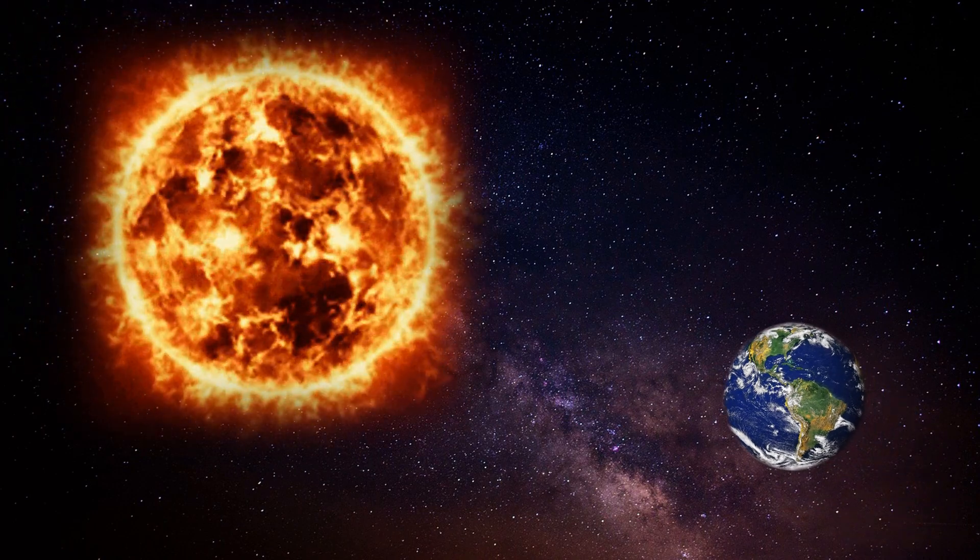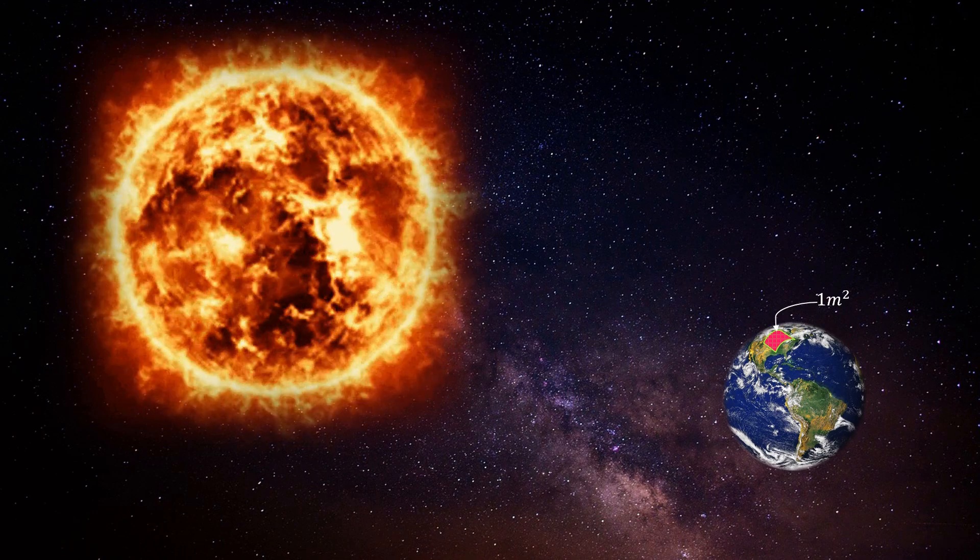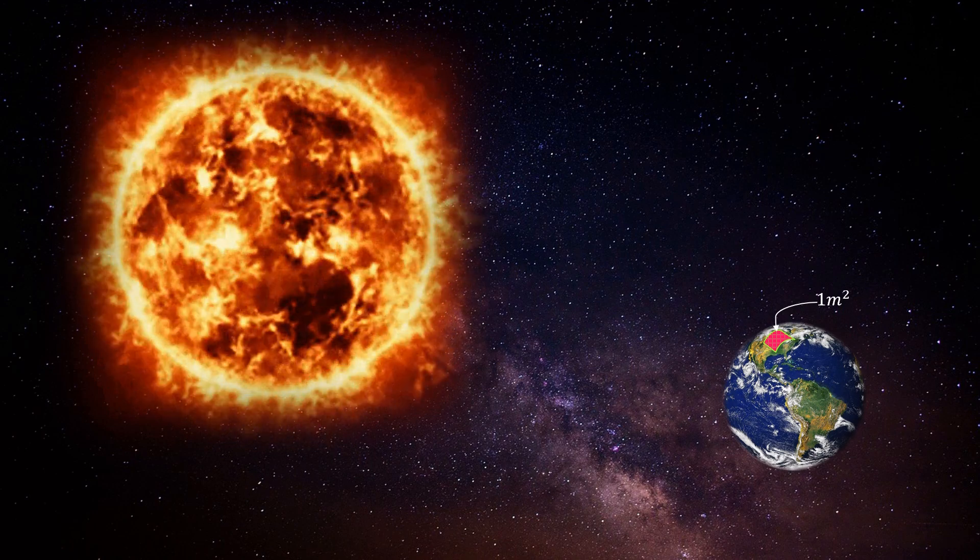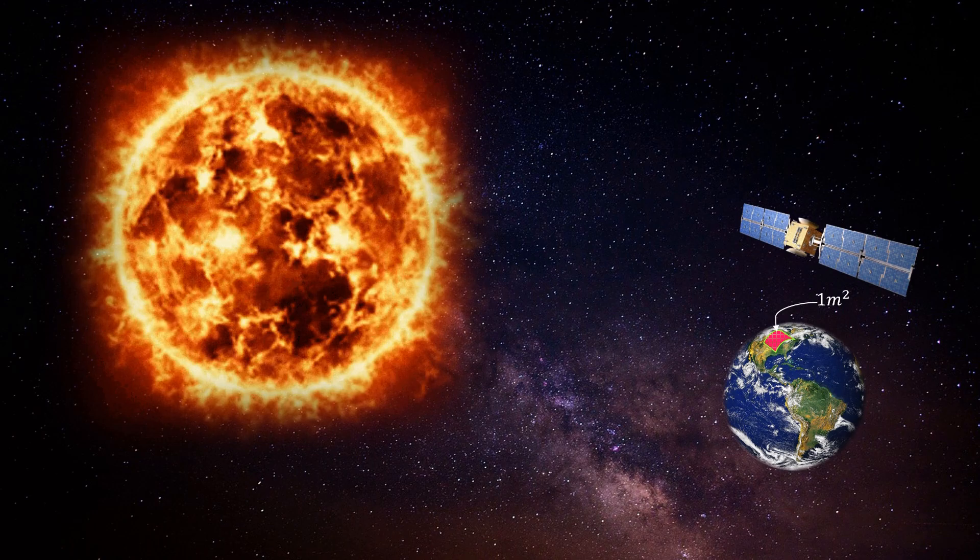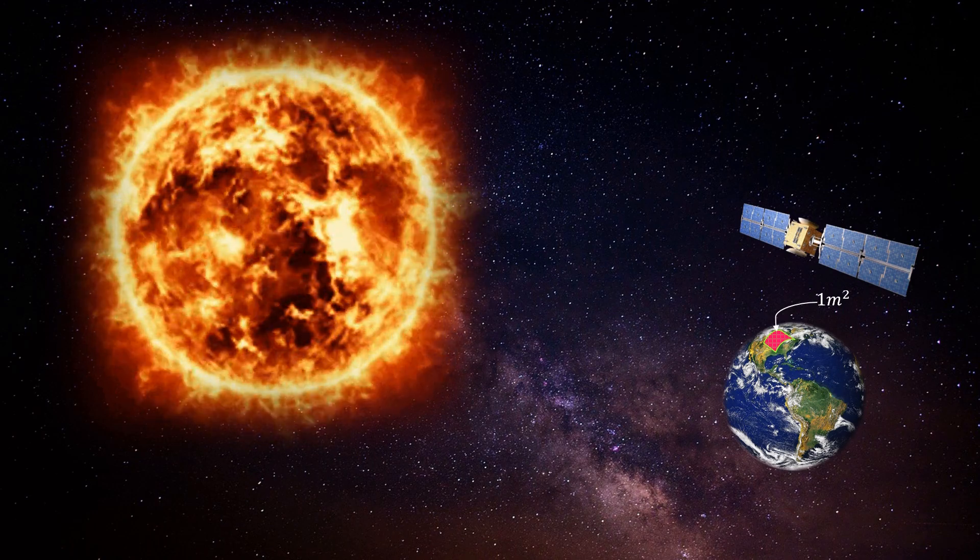Solar constant tells us how much solar power is available per square meter of surface at Earth. Using solar constant, we can figure out how much power we will get from the solar panels on the satellites. Let's see how solar constant is calculated.